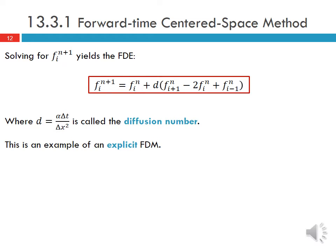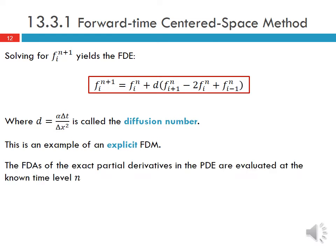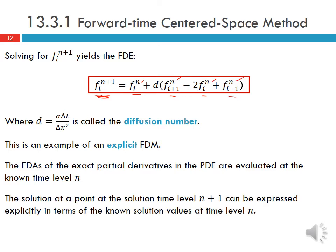This is an example of an explicit finite difference method where the finite difference approximations of the exact partial derivatives in the PDE are evaluated at the known time level N. The solution at a point in the solution time level N+1 can be expressed explicitly in terms of the known solution values at time level N. Without going into the stability analysis, this method is conditionally stable.